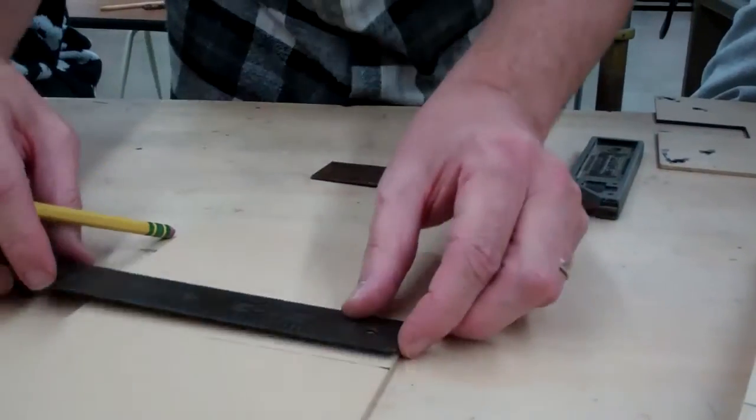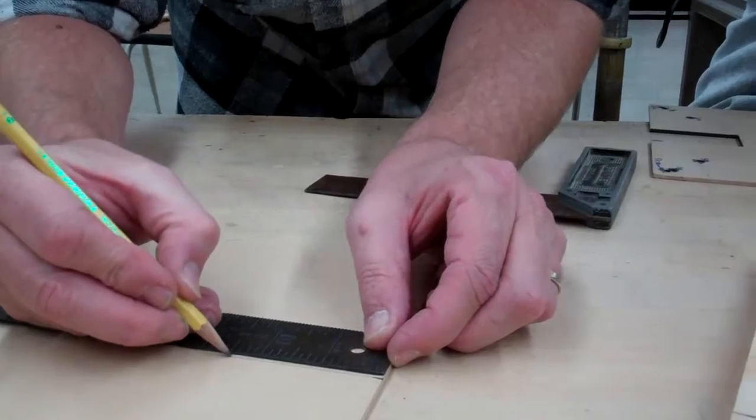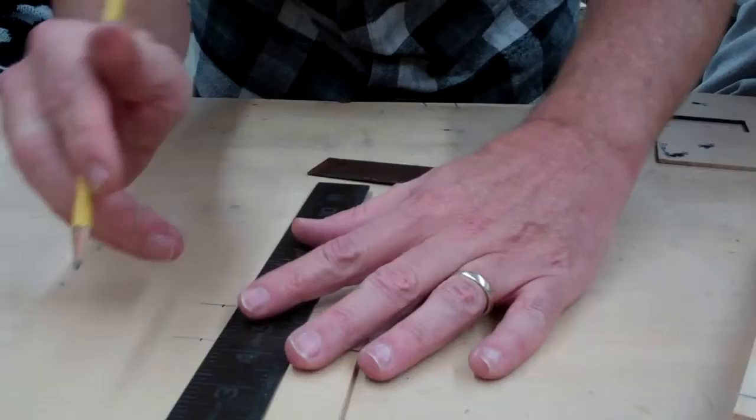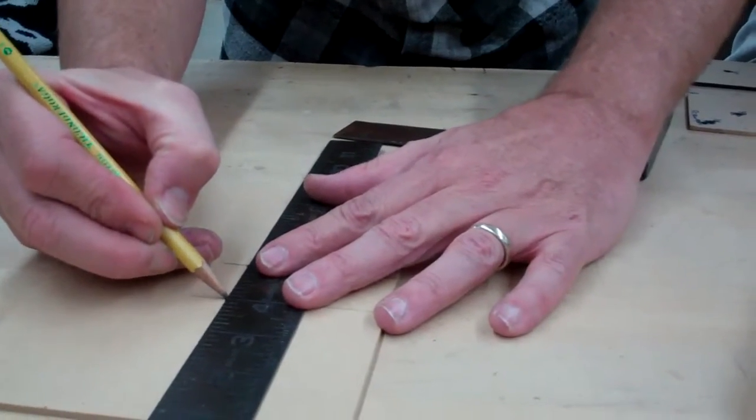Measure two and a half inches on each side and then connect the two. That's how big the slot is going to be.